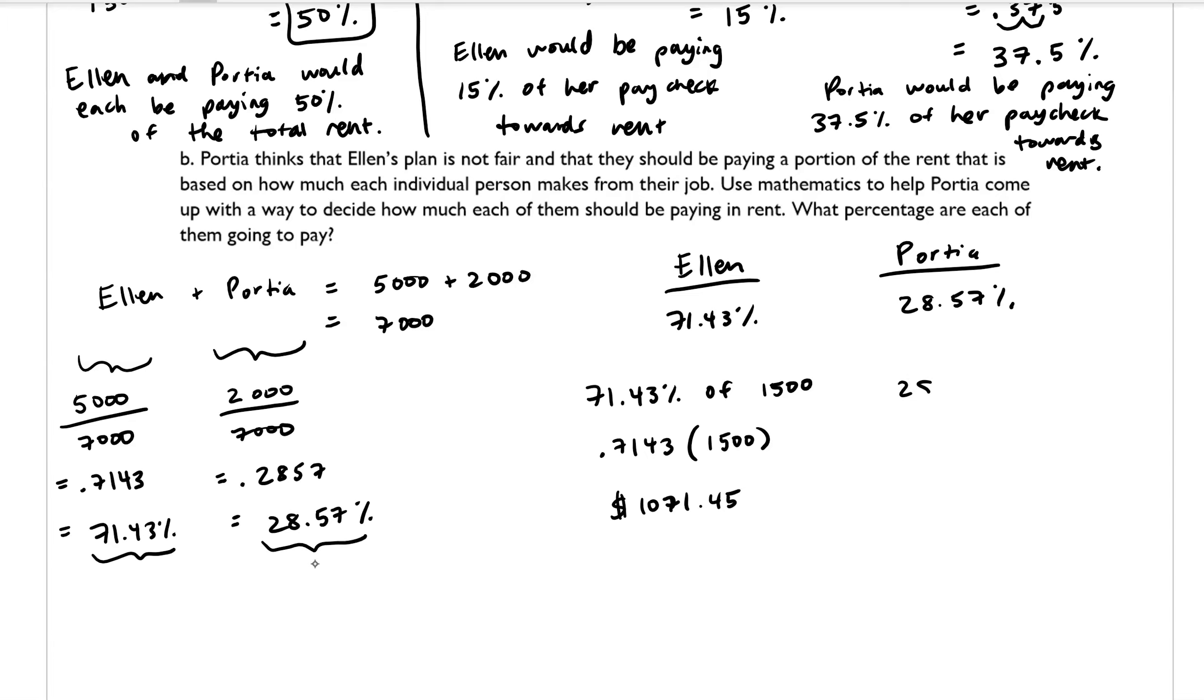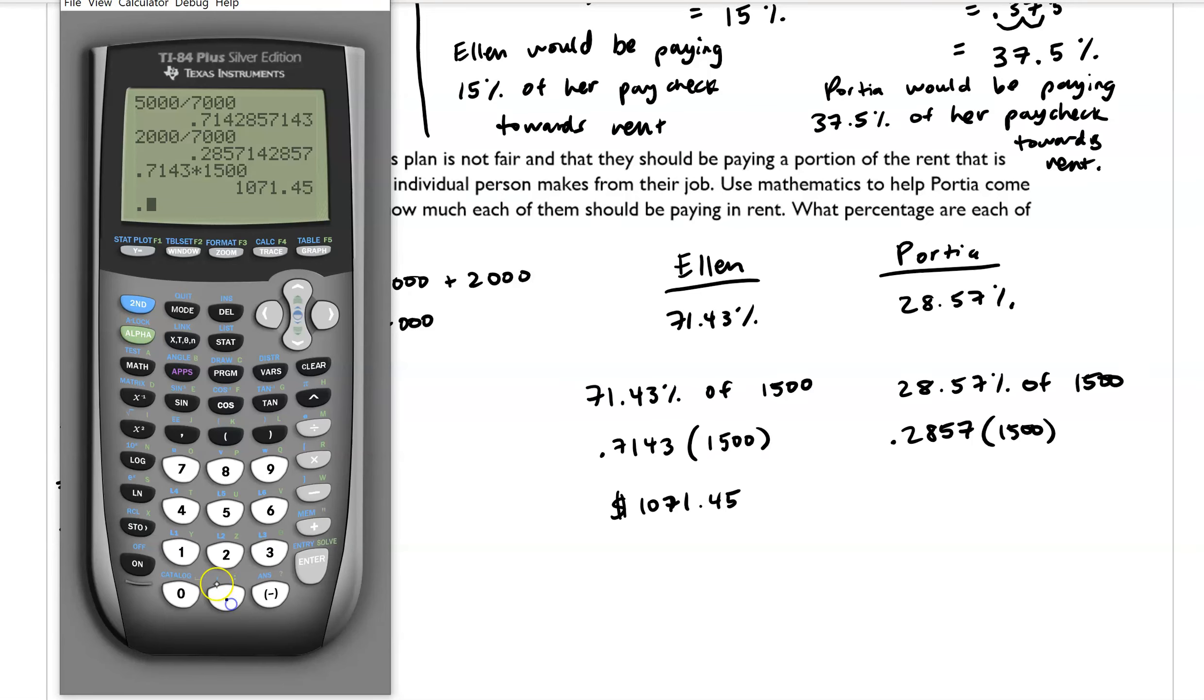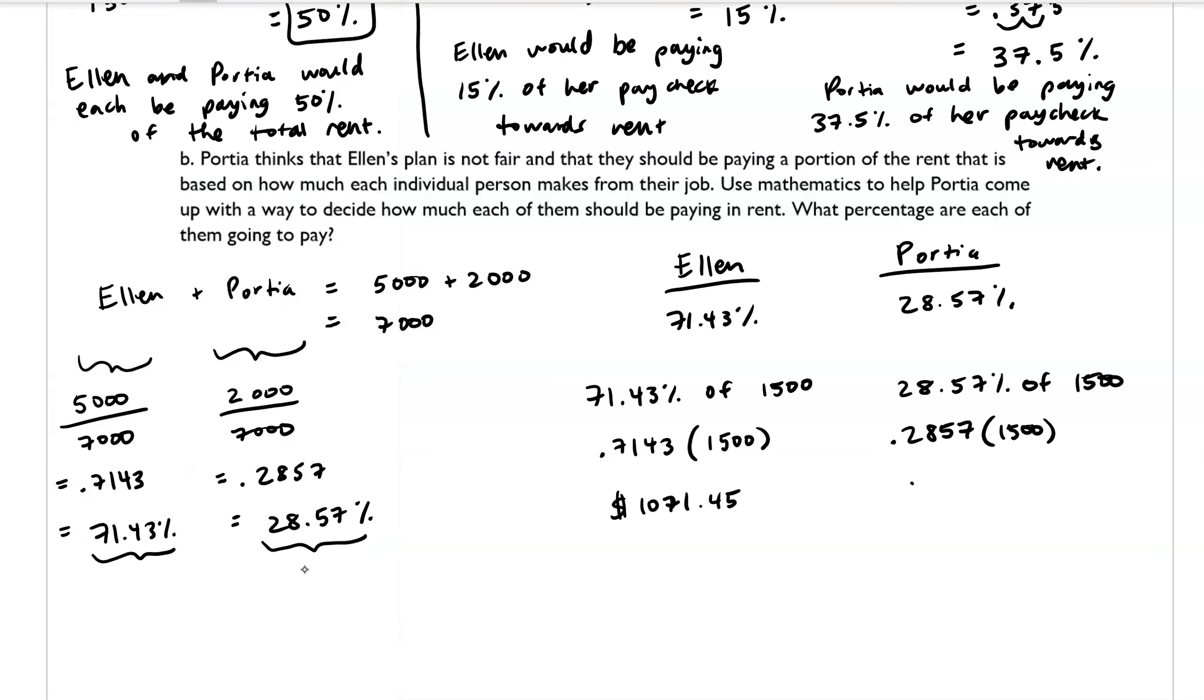And then we would want to take 28.57% of $1,500, convert that into a decimal, and then multiply that with $1,500. So 0.2857 times $1,500 gives us $428.55. So this would represent Ellen's portion of the rent, and this would represent Portia's portion of the rent.